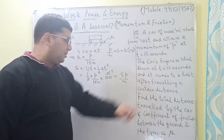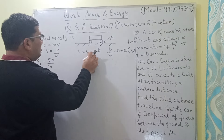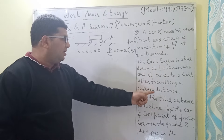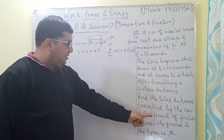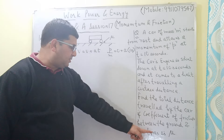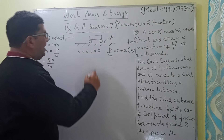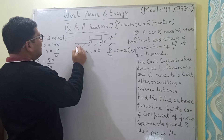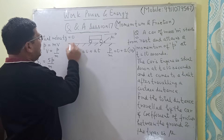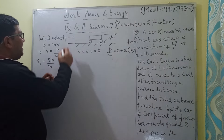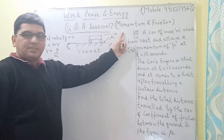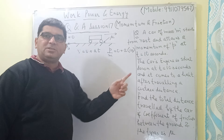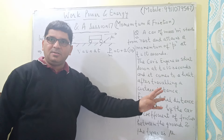S1 is the distance covered before the car's engine is shut down. Now in the second part, when the car's engine is shut down, the car comes to a halt after travelling a certain distance. The coefficient of friction between the ground and the tyres is mu. Since the force of friction opposes the relative motion, and the car is moving forward, the force of friction acts in the opposite direction — denoted as fs.